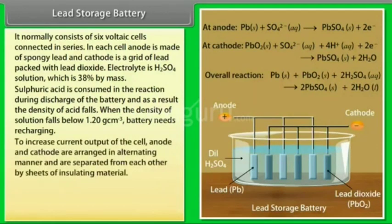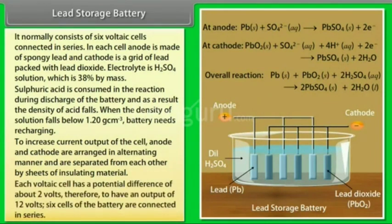To increase current output of the cell, anode and cathode are arranged in alternating manner and are separated from each other by sheets of insulating material. Each voltaic cell has a potential difference of about 2 volts.